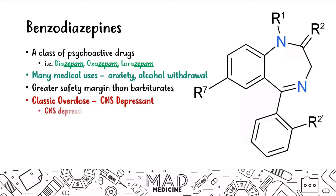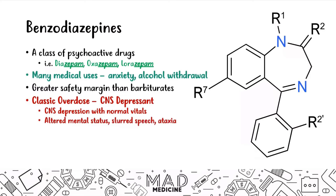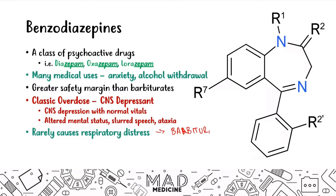In benzo overdose, the patient may have slurred speech or ataxia, but vitals remain normal due to the larger safety margin. Unlike barbiturates, which cause respiratory distress on overdose, benzos rarely present with respiratory distress. Benzo overdose can be treated — there is an antidote called flumazenil, which is a benzodiazepine receptor antagonist.